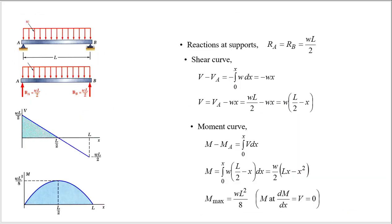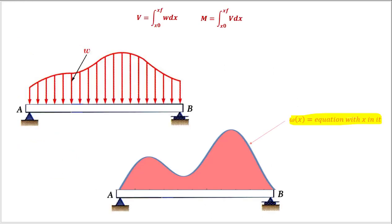Here's a synopsis: first find the reaction at the supports. Then use that to figure out the shear at any point — the reaction plus the area under the load curve gives your shear. Then take that shear equation and integrate it: the area under your shear curve is your moment. You can do this with any equation, any pile of snow that you want.